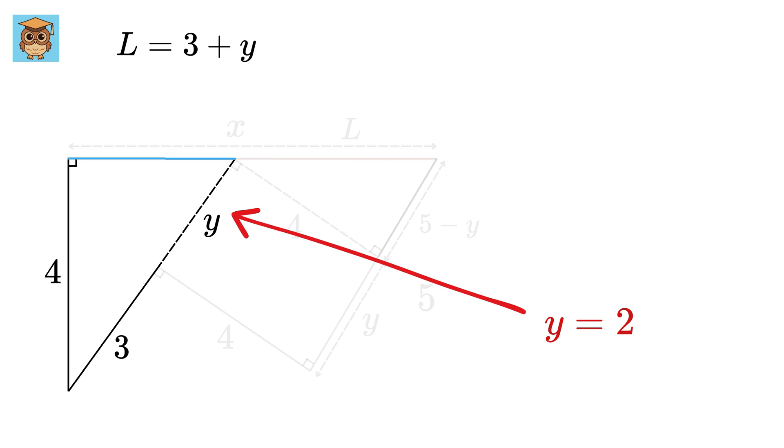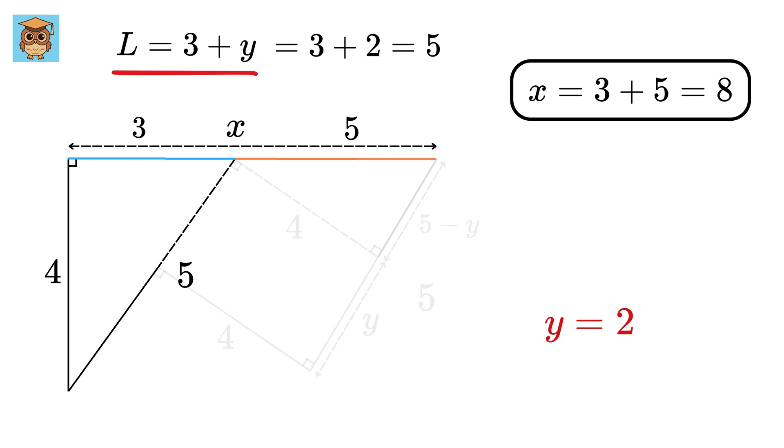Put Y equals 2, and we get this hypotenuse length as 5, and this is 4. So using 3, 4, 5 triangles, we know that this will be 3. Now this L will be 3 plus Y, which is 3 plus 2, or 5. So the value of X will be 3 plus 5 equals 8.